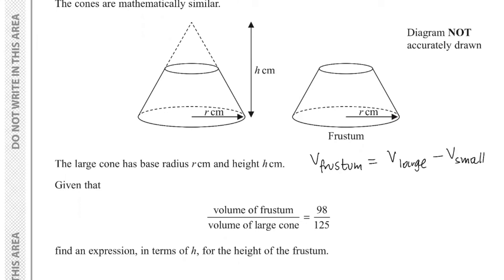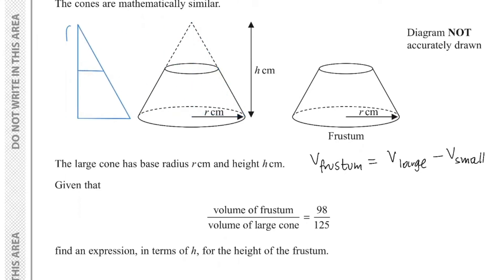It might be better to work with the cones because they are mathematically similar. I could draw a triangle within the large cone to extract all the necessary information. We have the height as small h and the radius as small r for the large cone, and we could call the radius of the small cone capital R and the height of the small cone capital H.